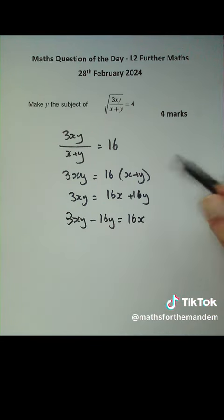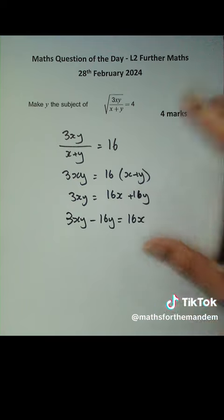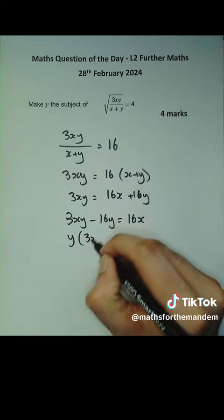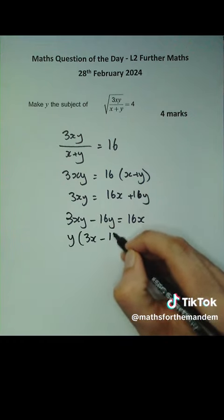Okay, a bit closer, but y is still in two places. So to get it in one place, I factorize out y. So y is my factor, and then I multiply by 3x minus 16, and that is equal to my 16x.